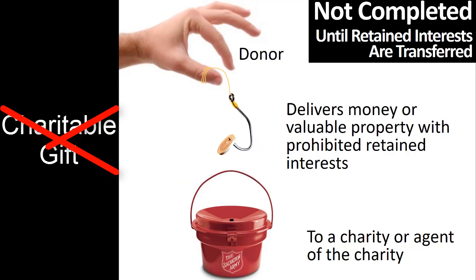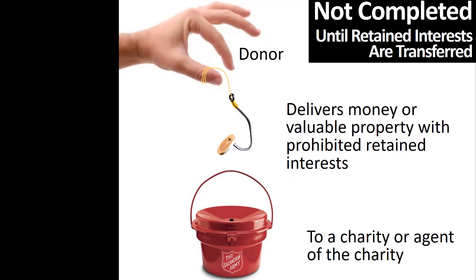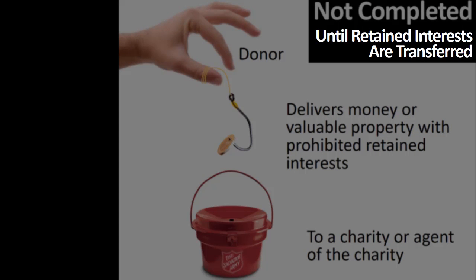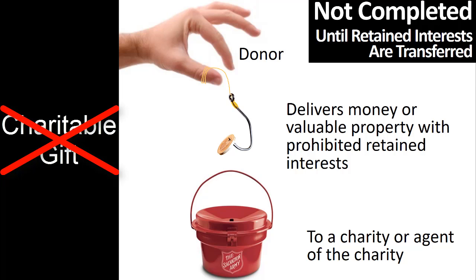Another example that does not qualify as a charitable gift for tax purposes is when the donor delivers money or valuable property to the charity, but still retains prohibited control over the money even after the transfer to the charity. This retained control prevents the gift from being deductible until such time as the retained interests expire or are also given to the charity. There are specific retained interests that are permitted by the tax code; nevertheless, the general rule is that if a donor retains rights to control or get back the money, such a transfer is not, or at least not yet, a charitable gift.